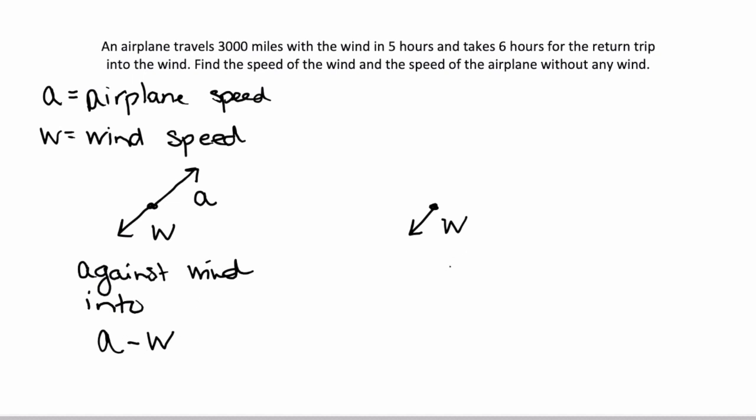The other option is that the airplane is going with the wind, and that means the airplane is going in the exact same direction as the wind. Therefore the plane would be moving faster, or the speed would be the airplane plus the wind speed.